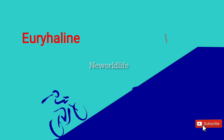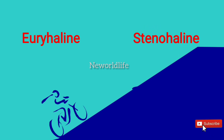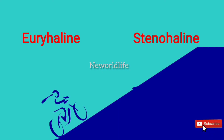Stenohaline organisms are completely opposite of Euryaline organisms. They can only survive within a narrow range of salinity. They can't live in freshwater — it's called Stenohaline.